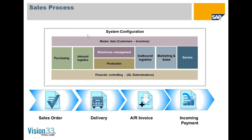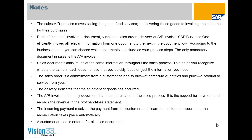All system processes — be they purchasing, inbound logistics, marketing, sales service, production, or warehouse management — rest on and require these master data elements and GL determinations to be set properly. Then the sales process comes into place with sales orders, deliveries, AR invoices, and incoming payments, and all of them rely on that system configuration being properly done.